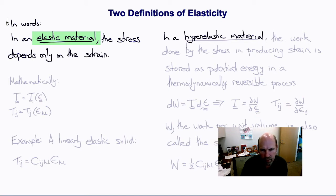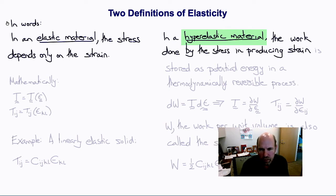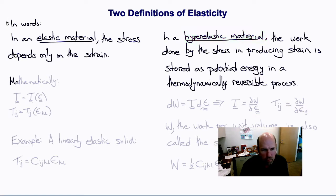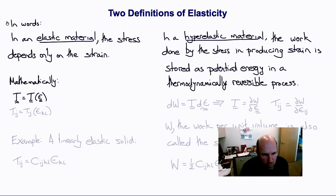In the second definition, which we call hyper-elasticity, we say that the work done by the stress in producing strain is stored as potential energy in a thermodynamically reversible process. Here we'll use the Cauchy strain tensor for these examples, but this could also be true of other strain tensors.